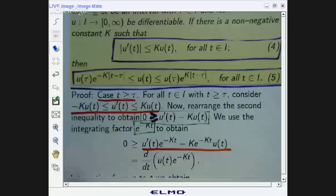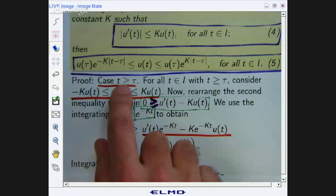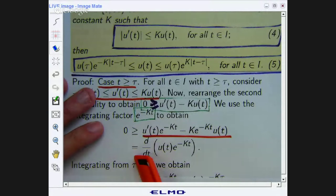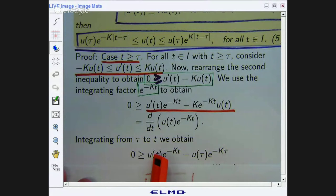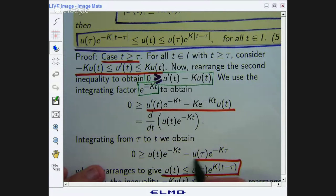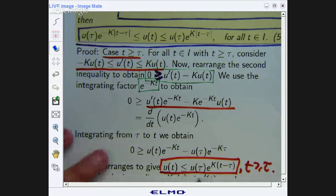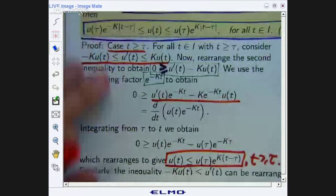So let's keep on going. So what I would do now is integrate both sides, keeping the inequality. So I integrate from τ to t because we're assuming t is greater than or equal to τ. So I integrate there. The zero stays the same. The d/dt will cancel and I use the fundamental theorem of calculus to get this expression here: 0 ≥ u(t)e^(-Kt) - u(τ)e^(-Kτ). What I can do now is rearrange, get u on one side and I get u(t) ≤ u(τ)e^(K(t-τ)). And remember this is for t greater than or equal to τ.